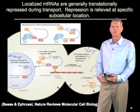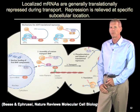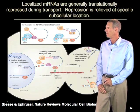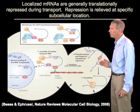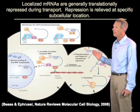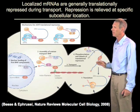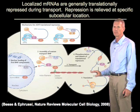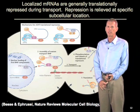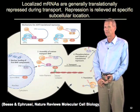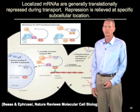If mRNAs are repressed during their transport, an important second principle is that their repression must be relieved once they reach their proper site. For example, in the case of the ASH1 mRNA, once the mRNA reaches the bud tip region, there are localized kinases present only in that region of the cell, which phosphorylate these RNA-binding proteins. They are released from the mRNA, and the mRNA can then enter translation. The two general principles to remember are: mRNAs are translationally repressed during transport, and once they reach their specific subcellular location, that repression needs to be relieved — in some cases by previously localized kinases.